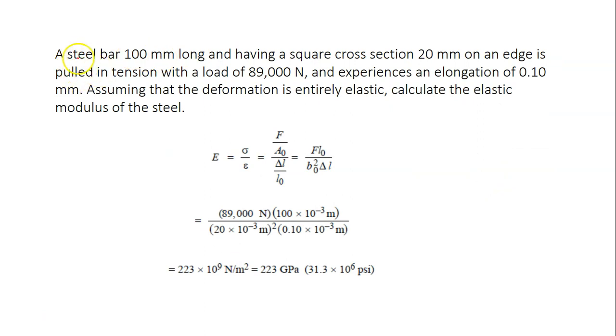For the second question, a steel bar 100 mm long, so you have a steel in a bar shape. The length of the steel is 100 mm, having a square cross-section.